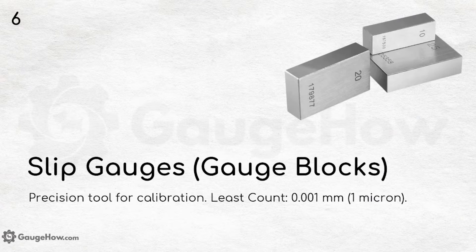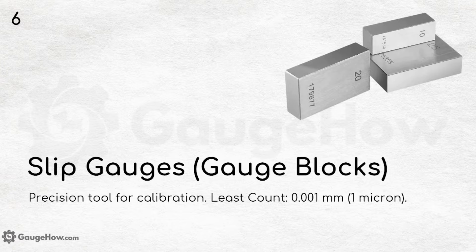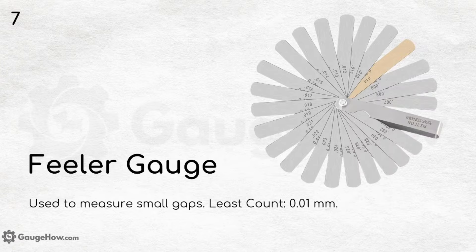Slip gauges or gauge blocks are precision tools used for calibration, with a least count of 0.001 mm, that is 1 micron. Feeler gauge is used to measure small gaps and the least count is 0.01 mm.